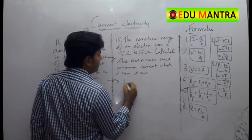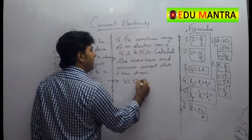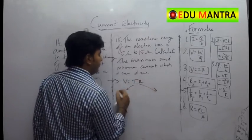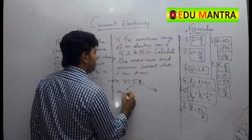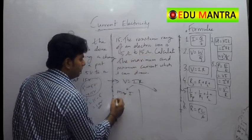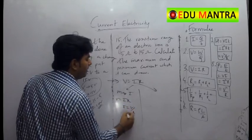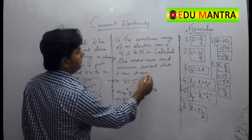The minimum current will be, again we have to use the formula V is equal to IR in both the cases. For maximum current, what we will do? We will take the minimum resistance. So V is equal to IR. So I is equal to V by R.